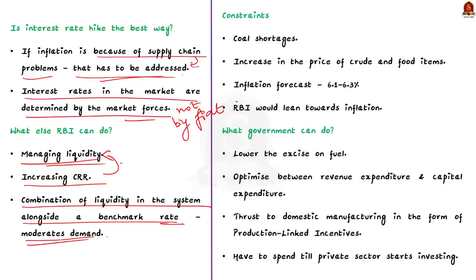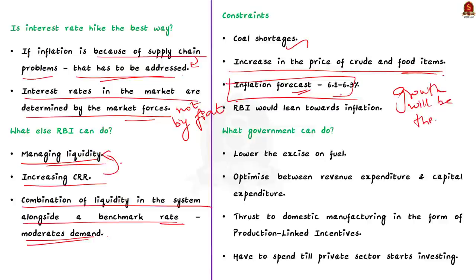We are already witnessing coal shortages. This will definitely impact the power tariff. There is also increase in the price of crude and food items because of war. The inflation forecast is in the band of 6.1 to 6.3 percentage. So there will be a growth. We all know that between inflation and growth, RBI would most certainly lean towards inflation because inflation is like a very inequitable tax on the less privileged.